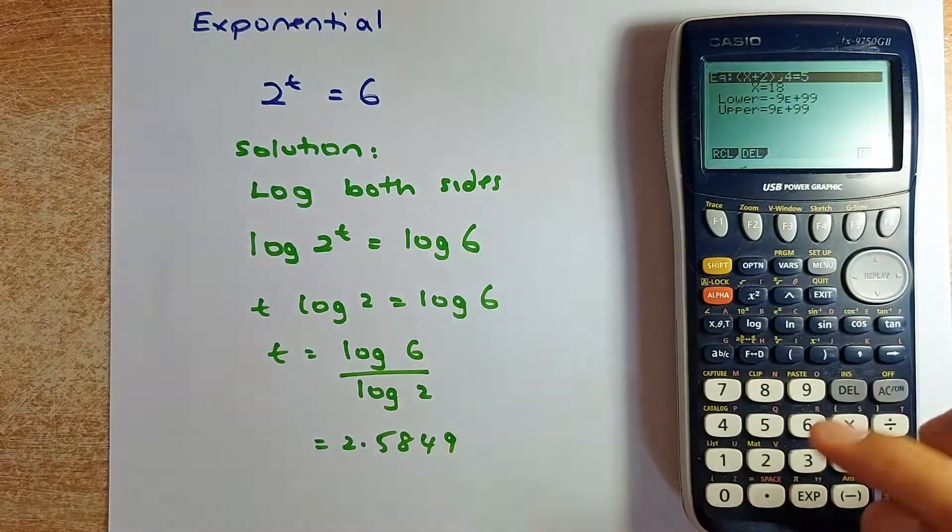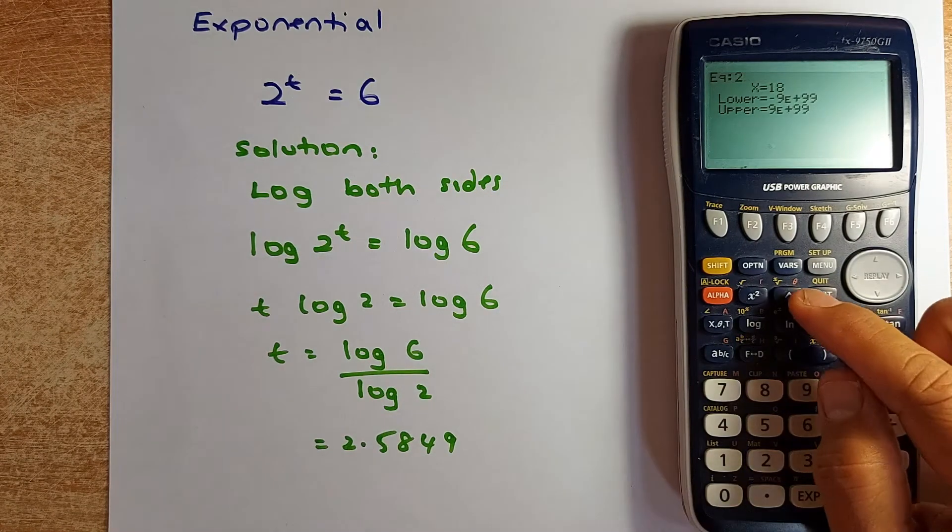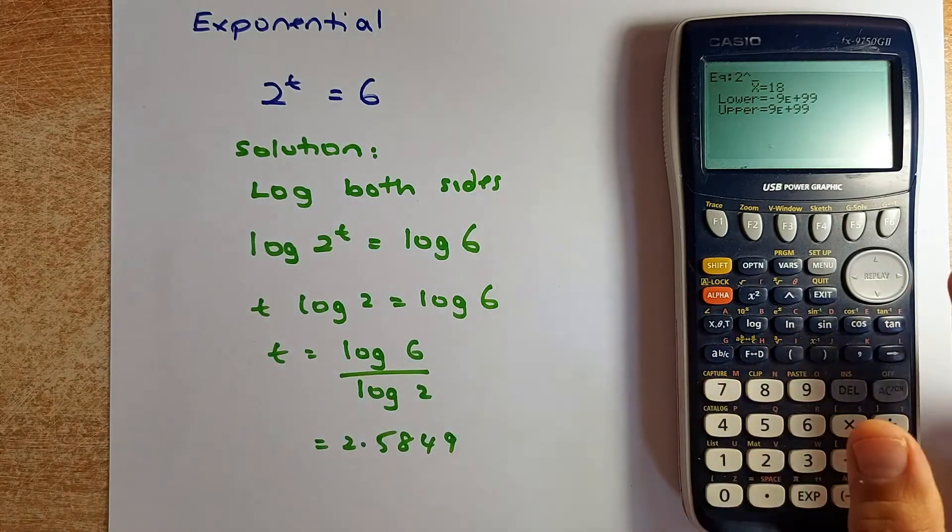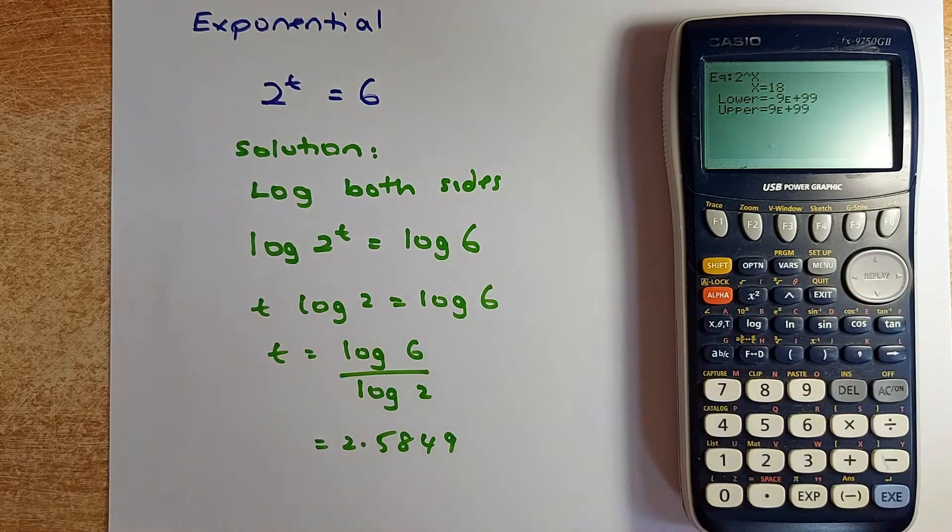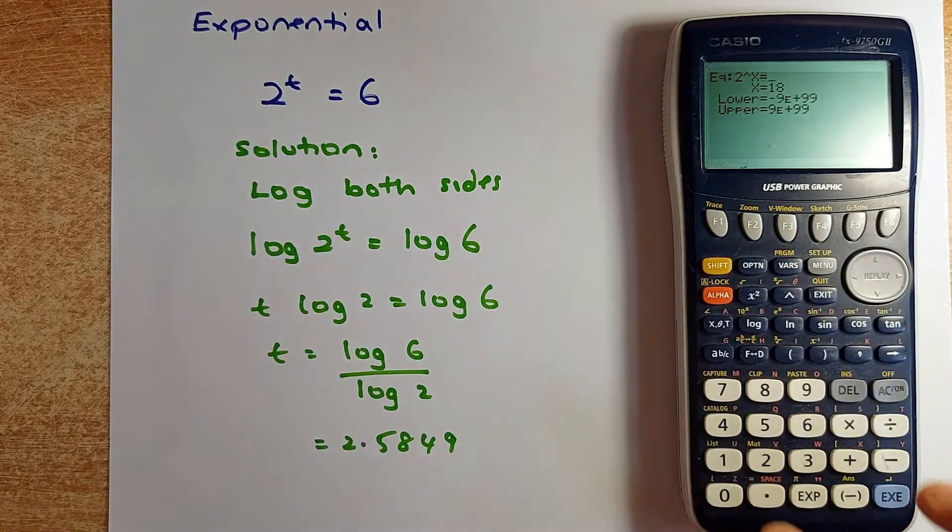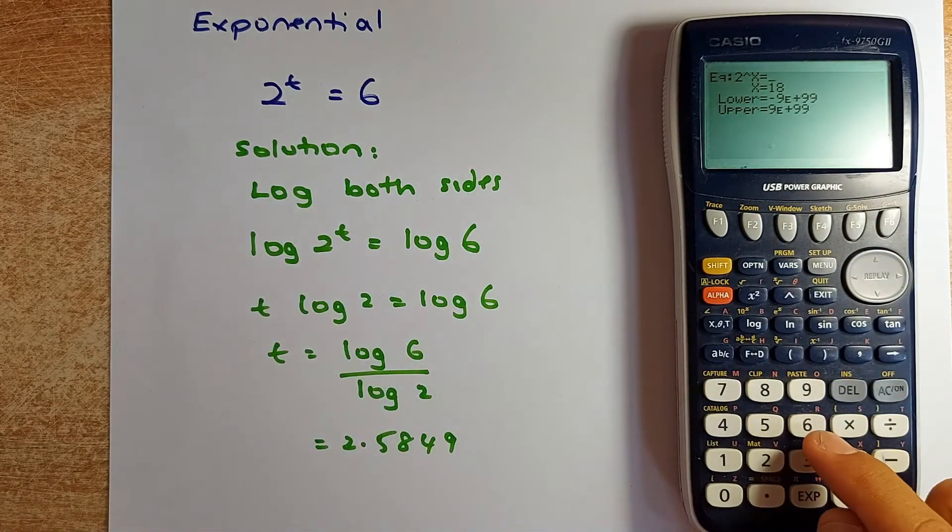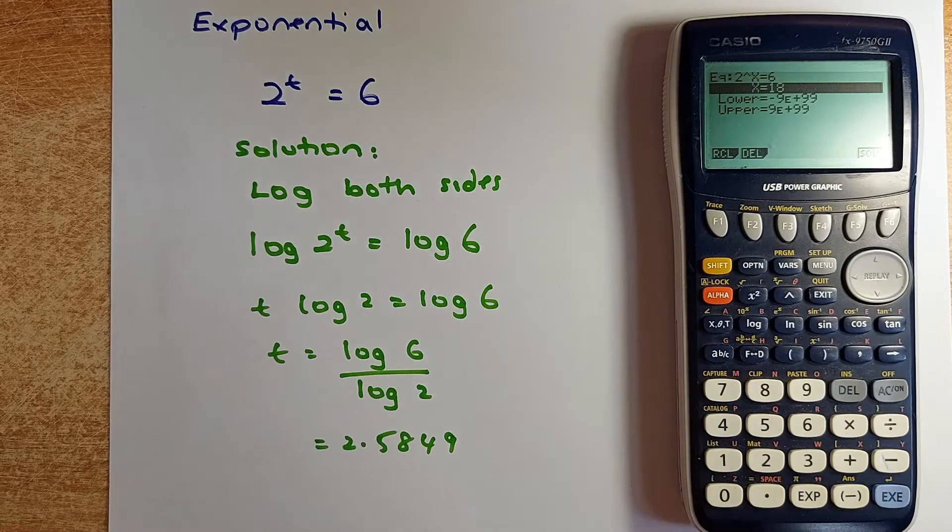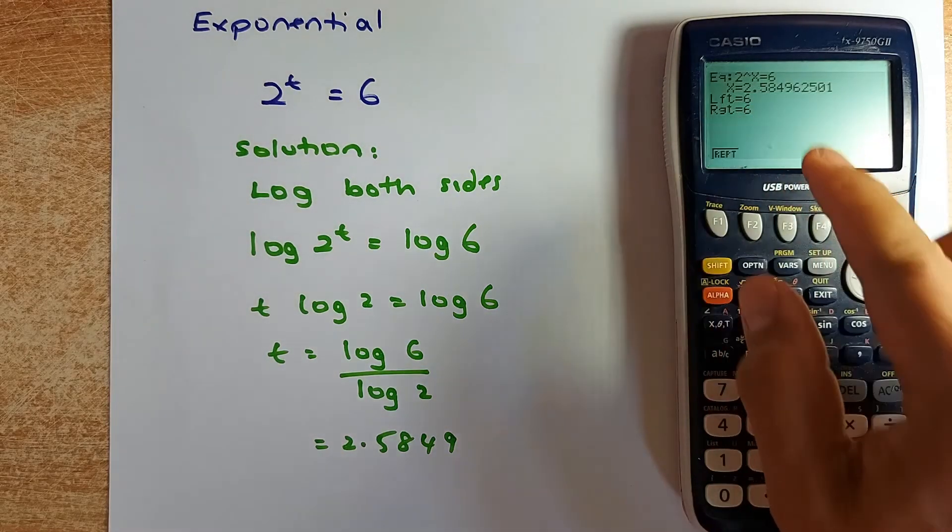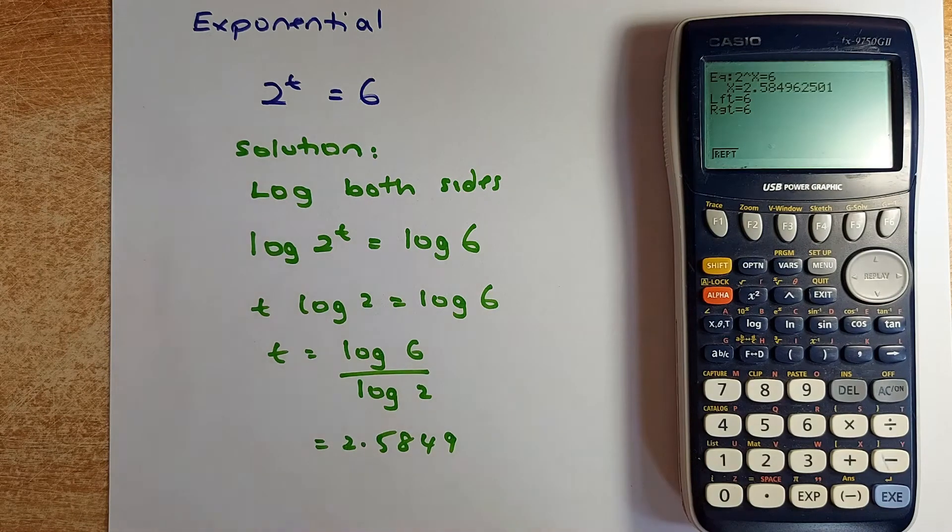Put equation again. 2 to the power, power is this button here. And then you are going to put 2 to the power of t. There is no t. So you are going to put x. It is the same thing, the unknown. And then equal is put shift decimal point. And then equal to 6. And then just press execute. And don't forget to press the solve button. And the solve button will give you 2.5849. It is exactly what we did before.